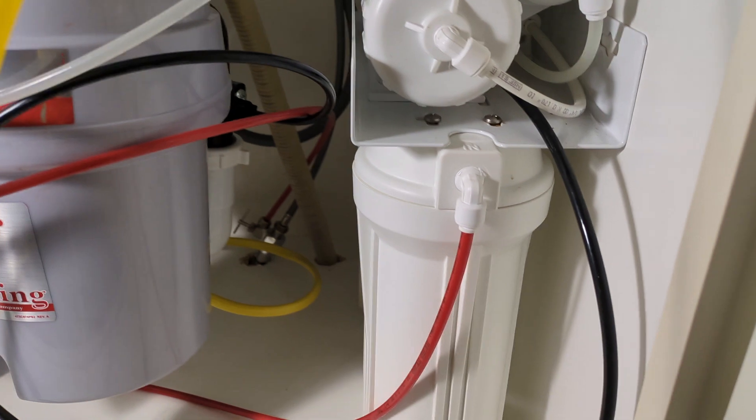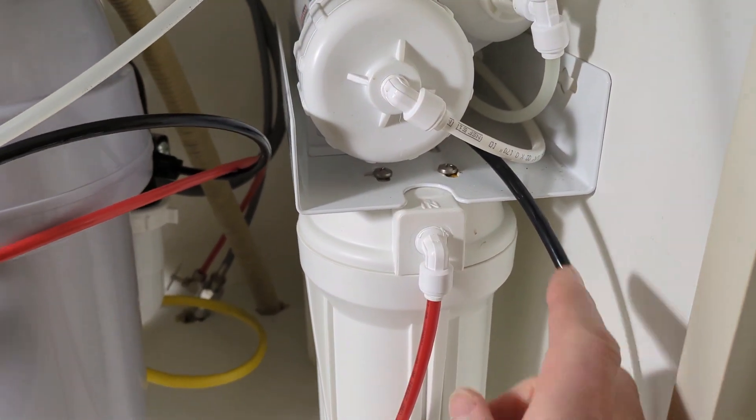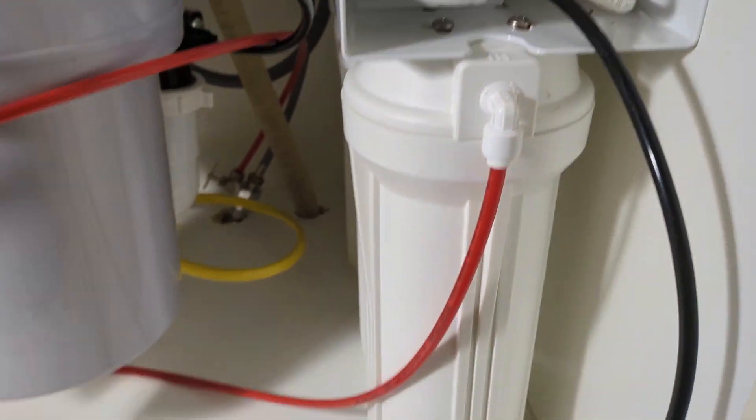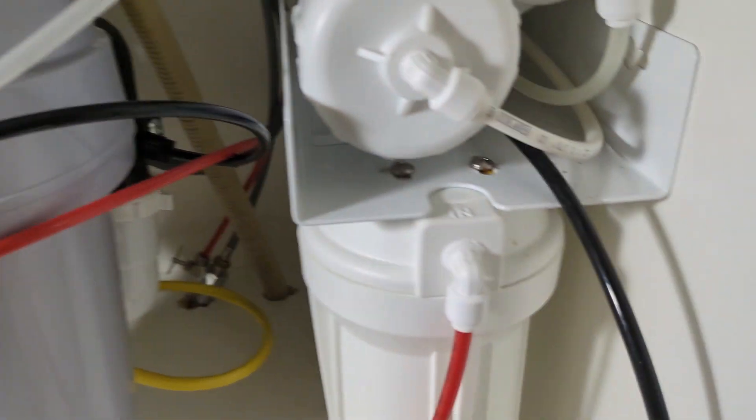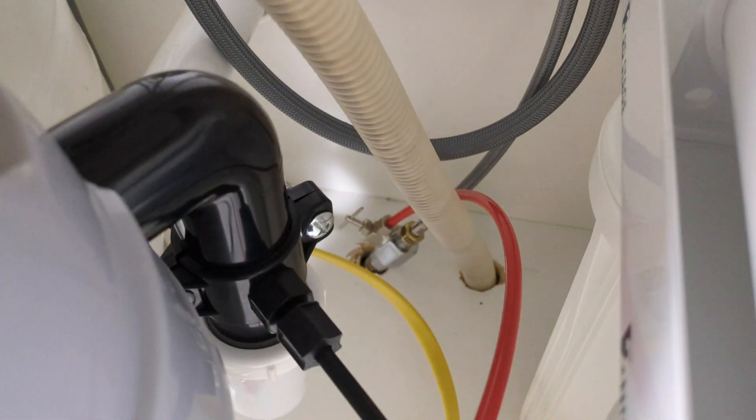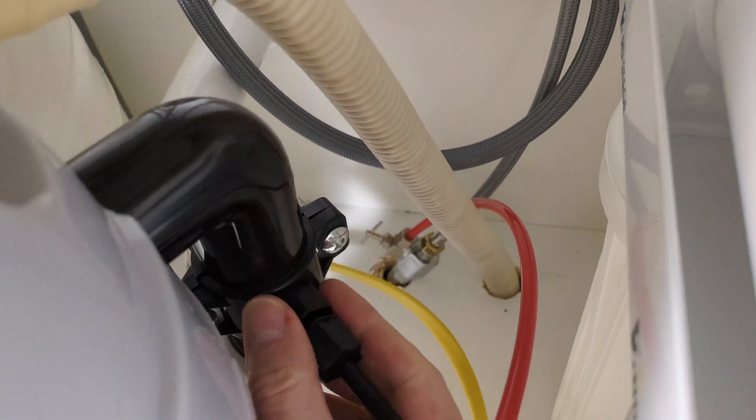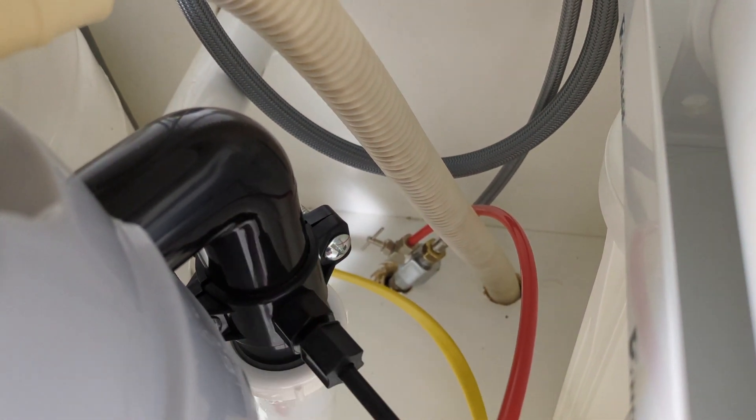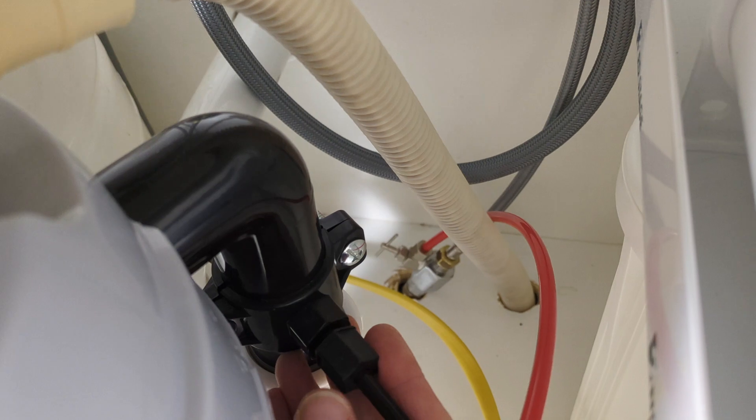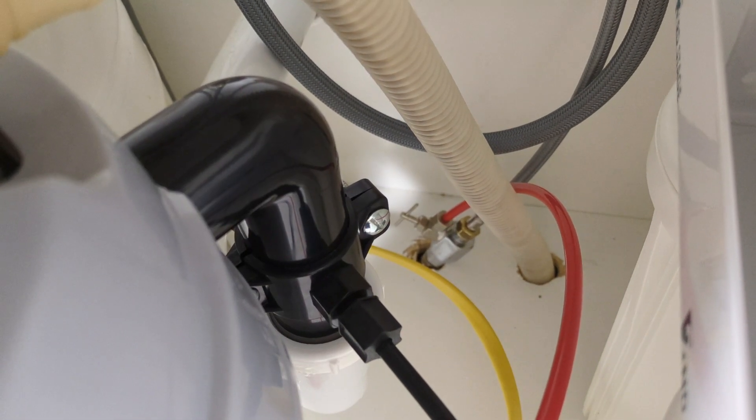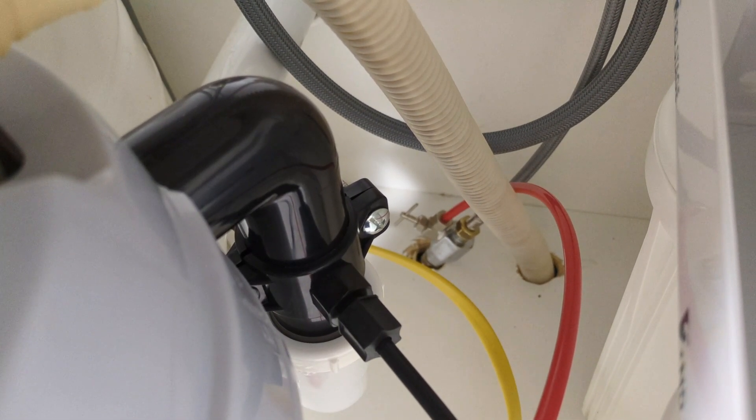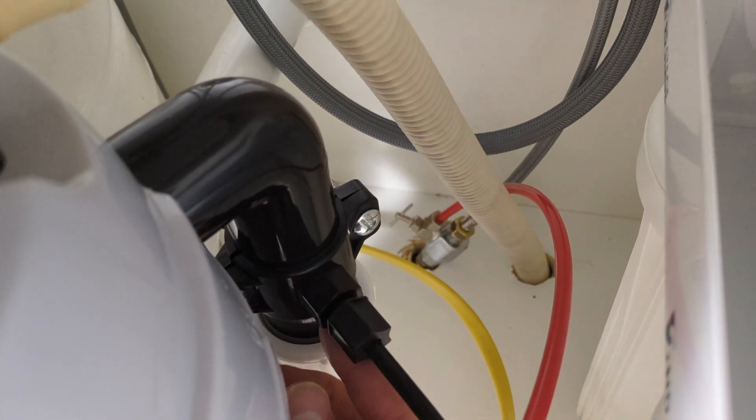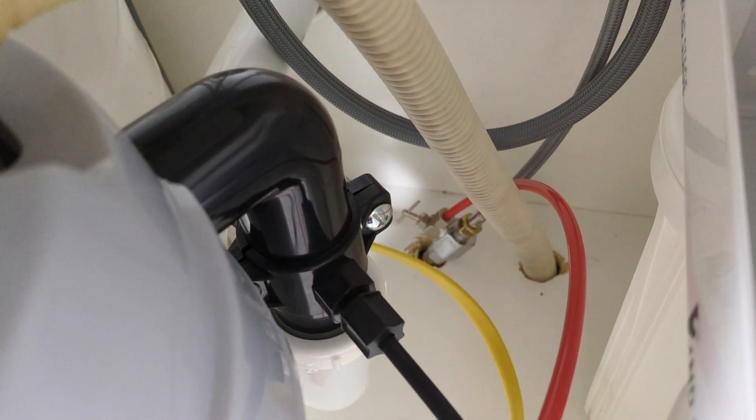As part of our reverse osmosis water filtration system, you're going to have some wastewater. That's what this black line is showing. And for that connects to the saddle where you drill into your drain pipe. And this is actually a very nice connection that's never leaked. So as this is filtering more water and filling up the tank after you use some water, you can hear some of that drain water going into the drain.